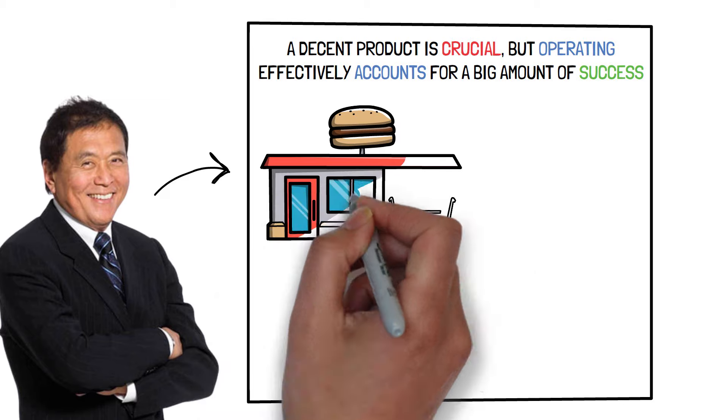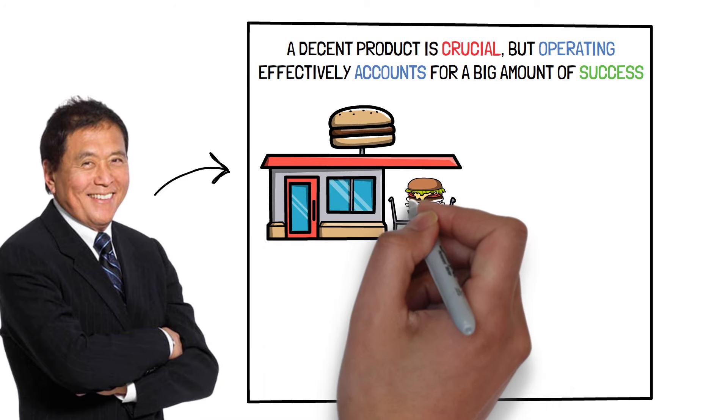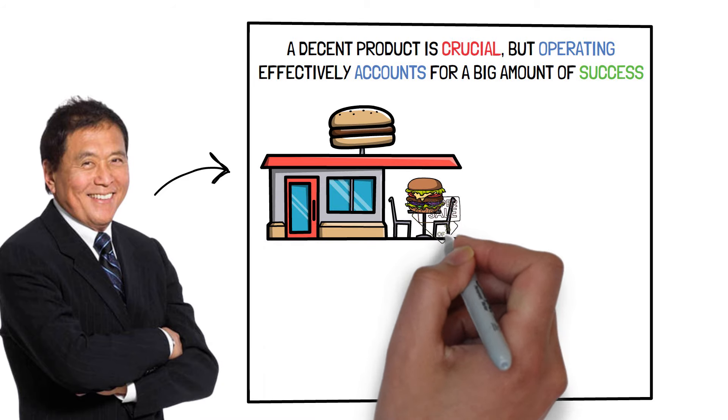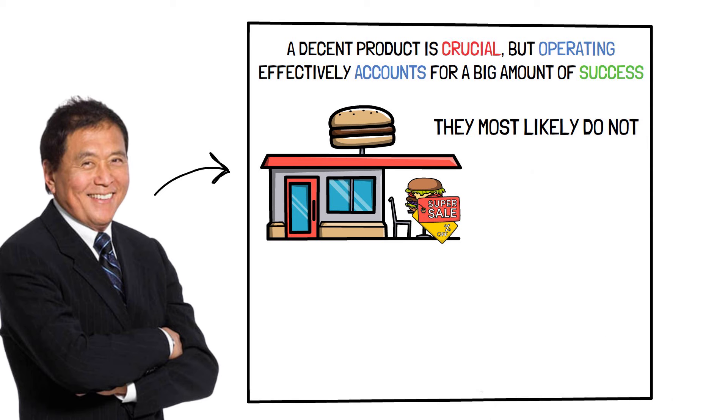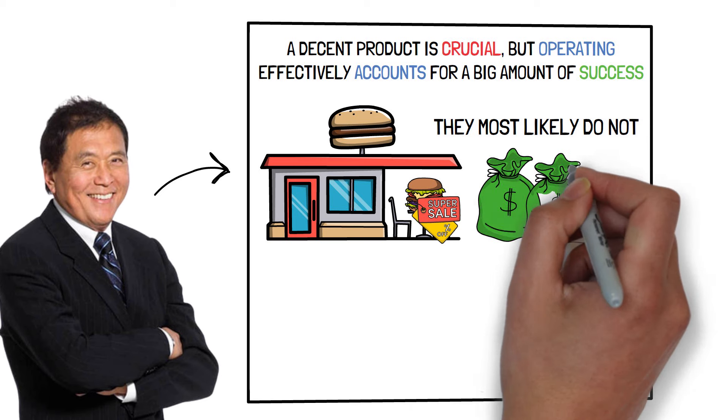Examine a fast food establishment and consider whether it offers the best product at the best pricing. They most likely do not. But if the business is conducted well, they can still make a profit.